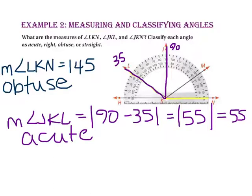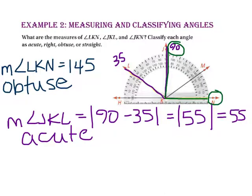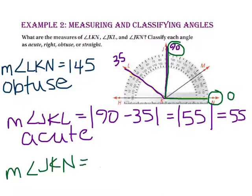Now let's look at angle JKN. Ray KJ points to 90 on the protractor on both the inside and outside ring, and ray KN points to 0. So from 0 to 90, the measure of angle JKN is 90. Since the angle measure is exactly 90 degrees, angle JKN is a right angle.